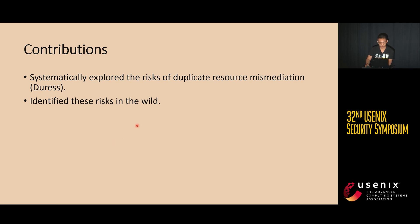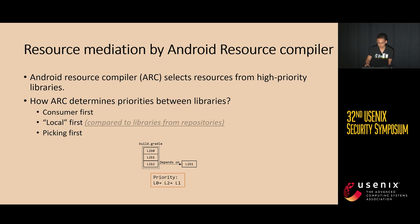We also measured the real-world impact. Before we start, we need to understand resource mediation by ARC. In the case of duplicate resources in different libraries, ARC will select the resource from the higher-priority library. That means resources from lower-priority libraries with the same name will be dropped. There are three rules to determine the priority. The consumer-first rule means that if library 2 depends on library 1, then library 2 has a higher priority. The local-first rule means that local libraries will have higher priority than remote libraries.